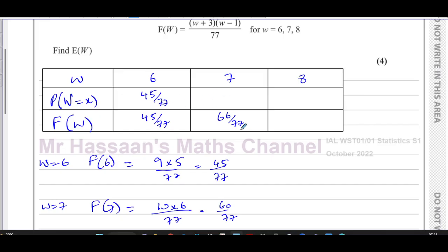That's 60 over 77. So what do you have to add to 45 over 77 to give you 60 over 77? Well, you have to add 15. So that must be the probability of 7 must be 15 over 77.